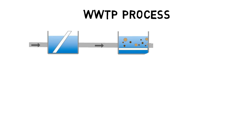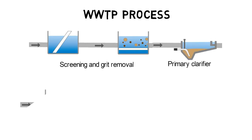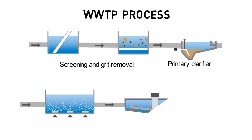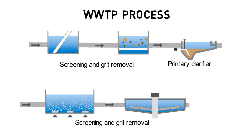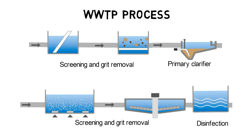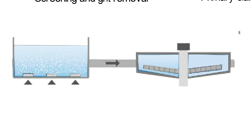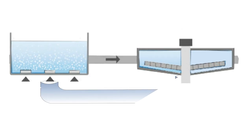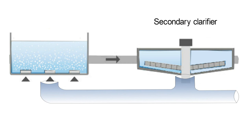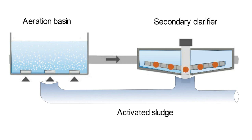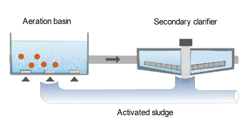Municipal and industrial wastewater undergoes various treatment steps in WWTPs before it is released back into rivers and other waterways. In secondary clarifiers, most sludge is collected and recycled back to the aeration basin to generate a stable and productive active sludge for nutrient removal.